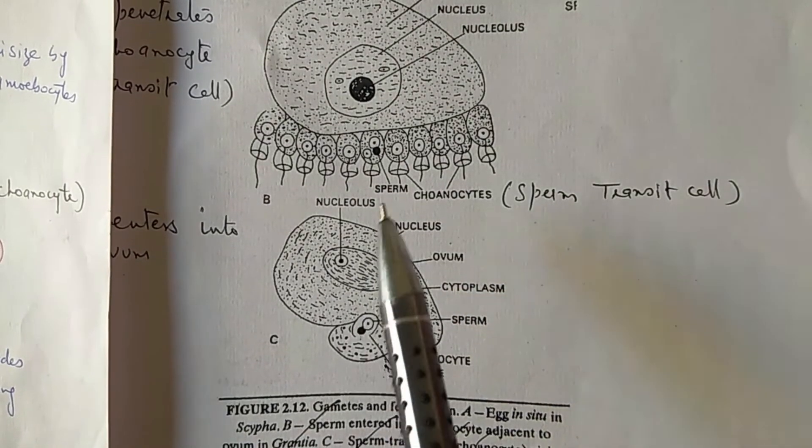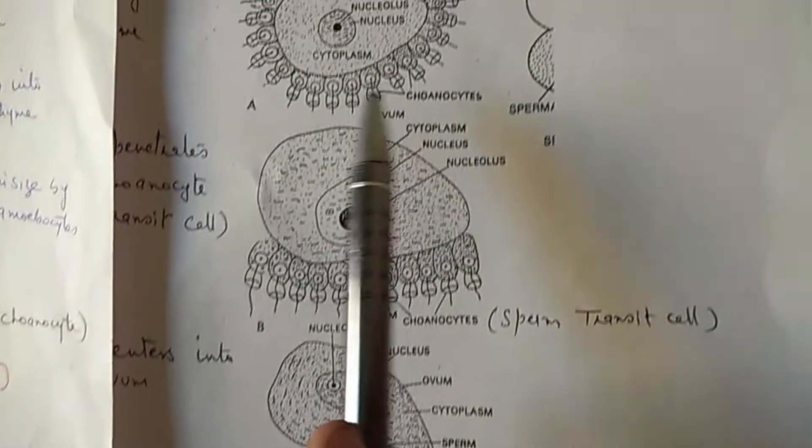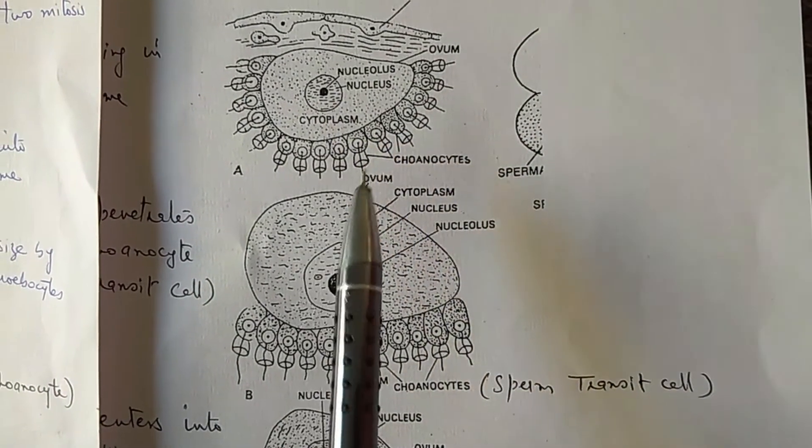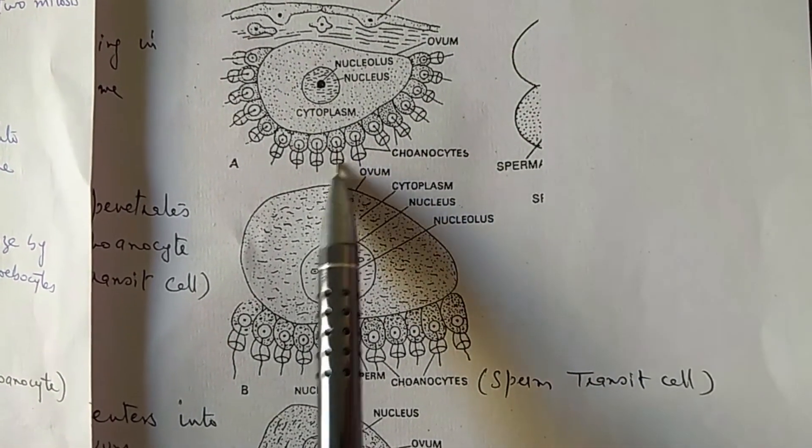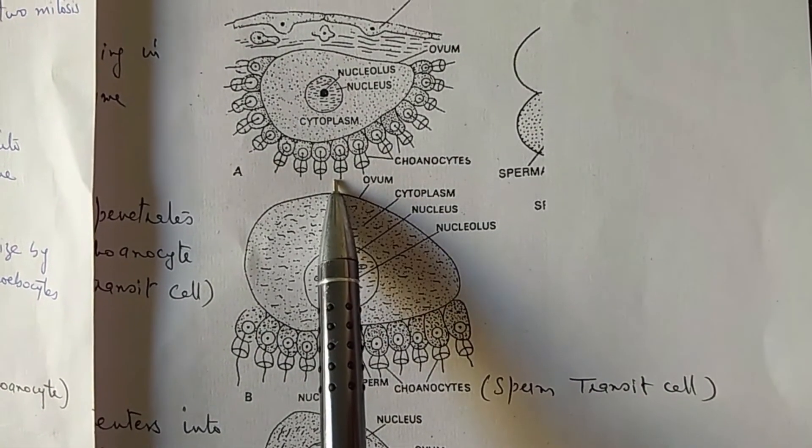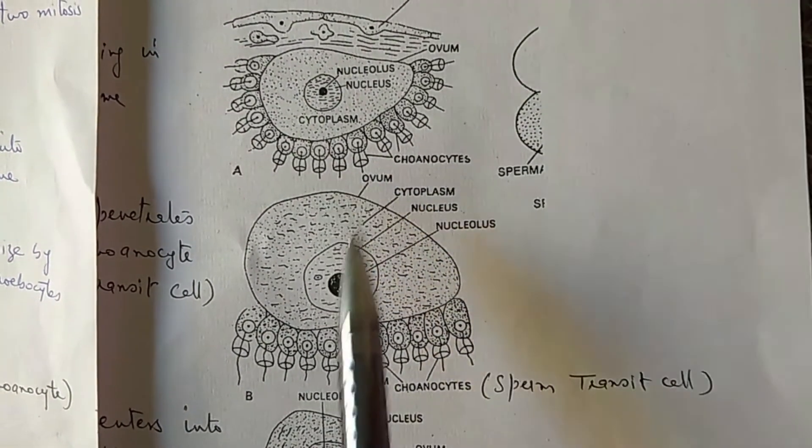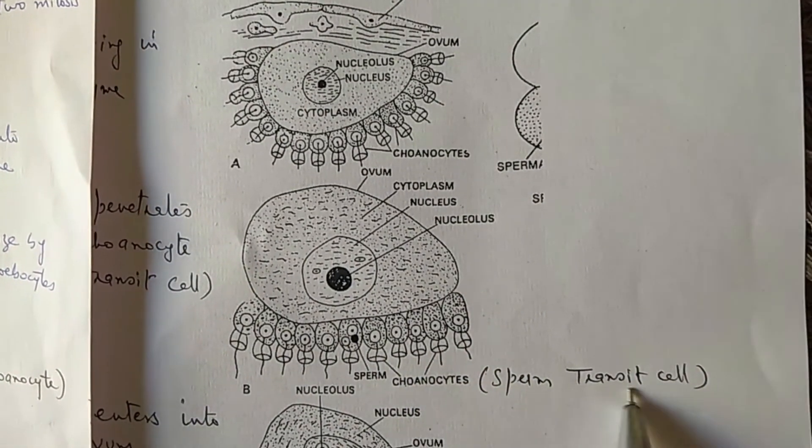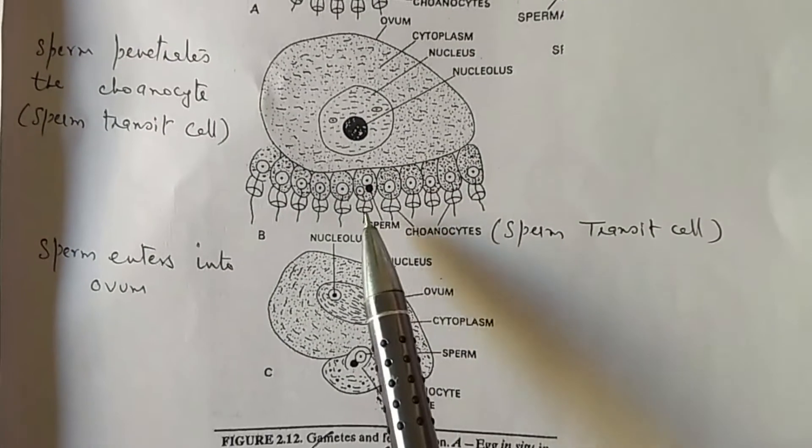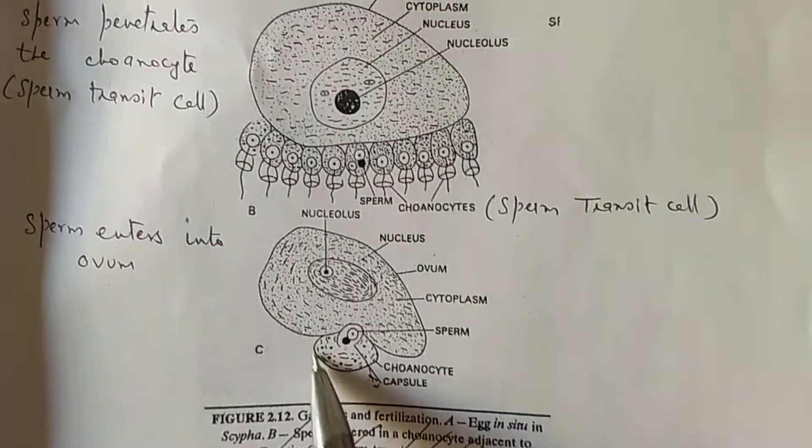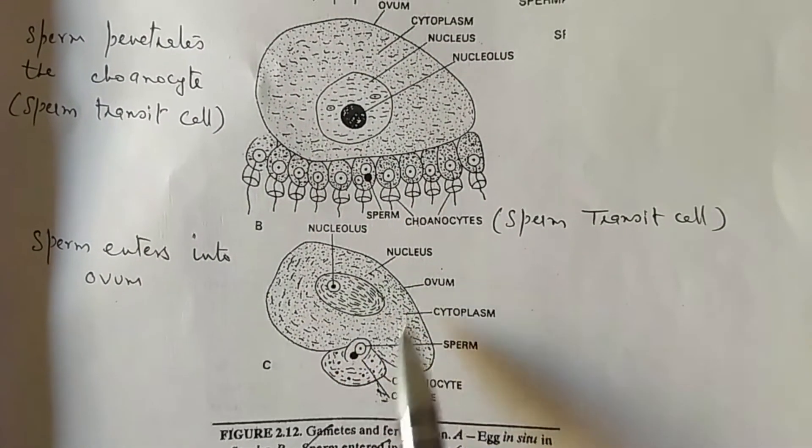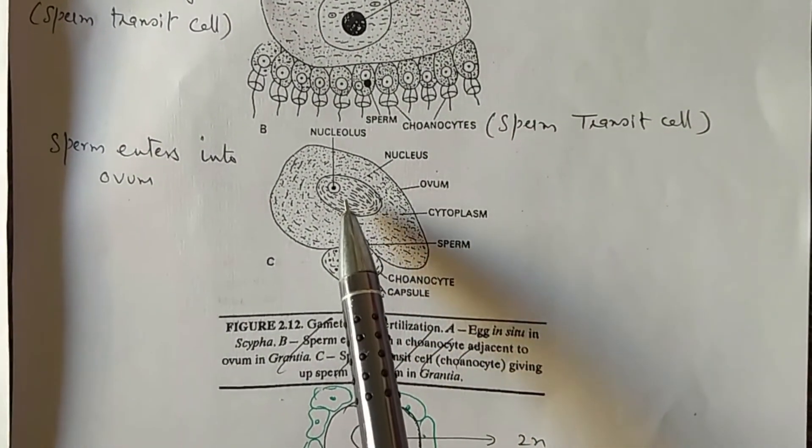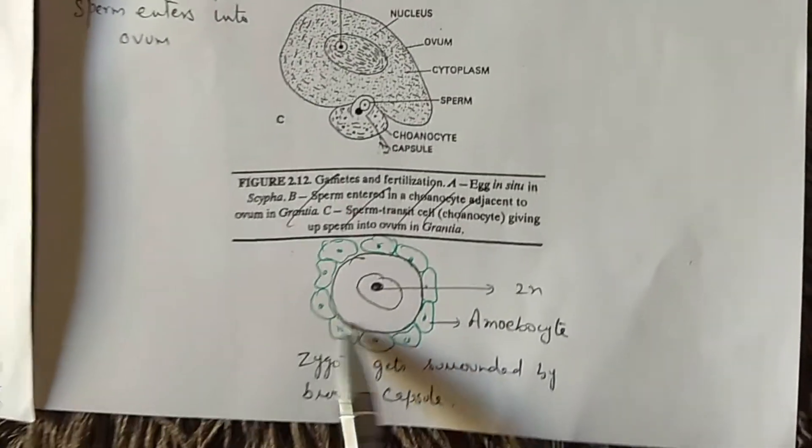Simply, when sperm comes to radial canals, the egg is in mesenchyme. So sperm penetrates the choanocyte layer, since radial canals are lined by choanocytes. The penetrated choanocyte is called sperm transit cell. The sperm transit cell loses its flagellum and collar and becomes amoeboid. The egg develops a depression and receives this sperm transit cell. Ultimately, sperm enters into egg and a zygote is formed.